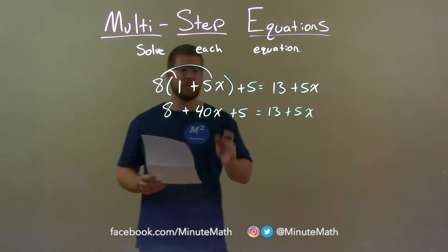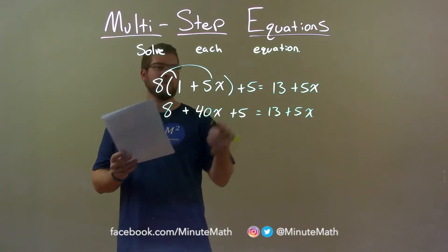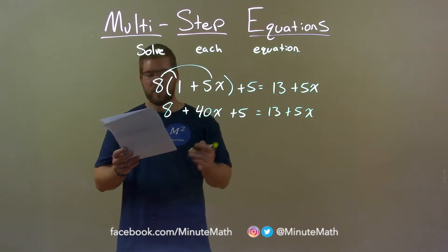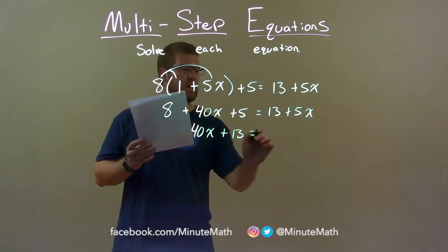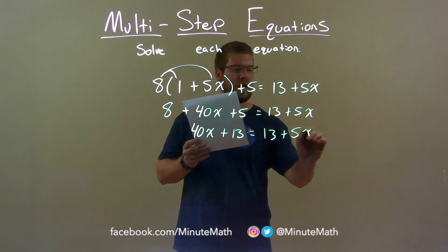From there, I want to combine my like terms on each side and 8 plus 5 are the like terms on the left. 8 plus 5 is 13 so we have 40x plus 13 now and that equals 13 plus 5x.